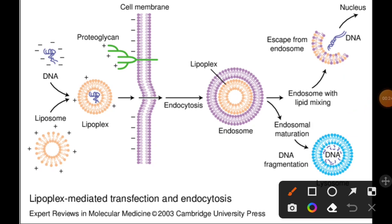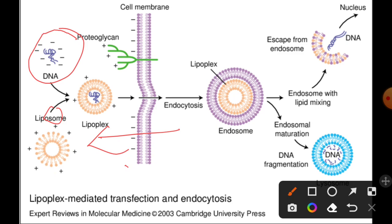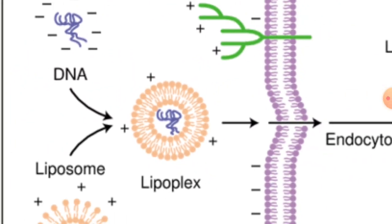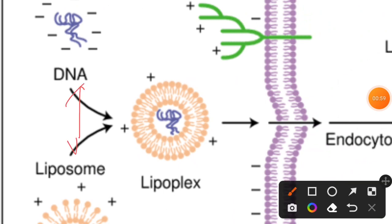For liposomal mediated gene delivery, the first goal is the construction of a cationic liposome, which can be easily constructed. A complex is then formed which contains the liposome packaging the DNA molecule, leading to the formation of the lipoplex.